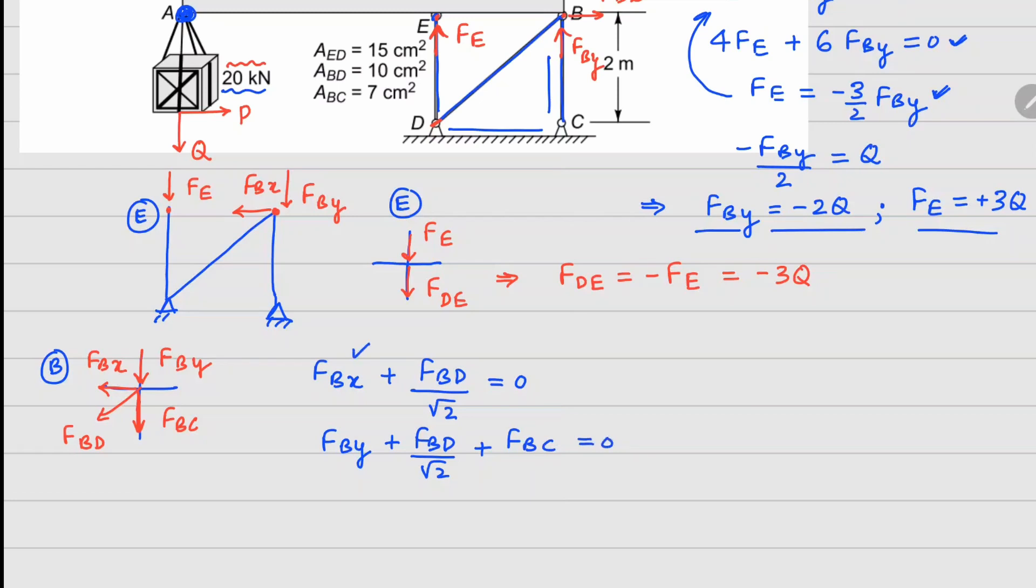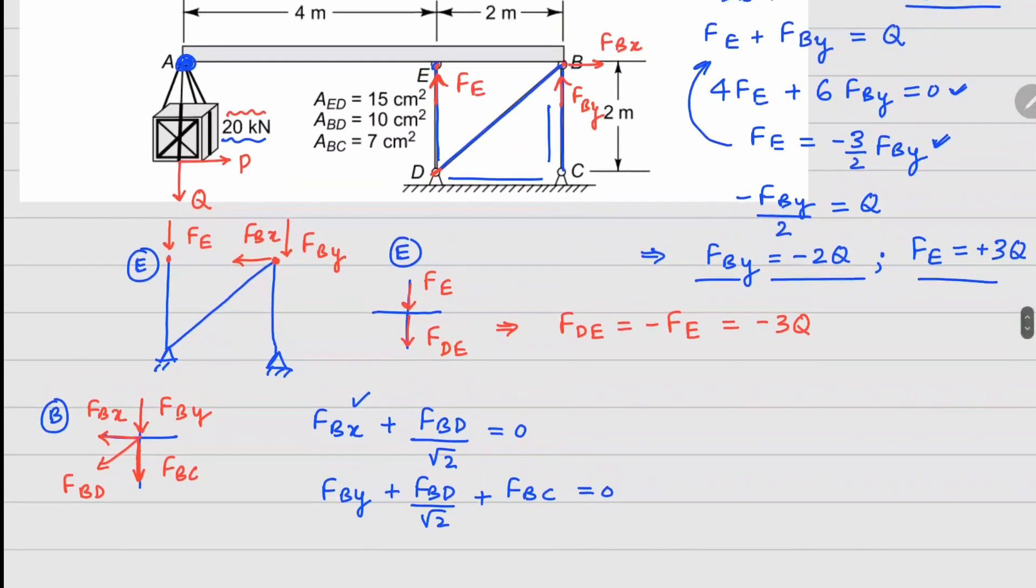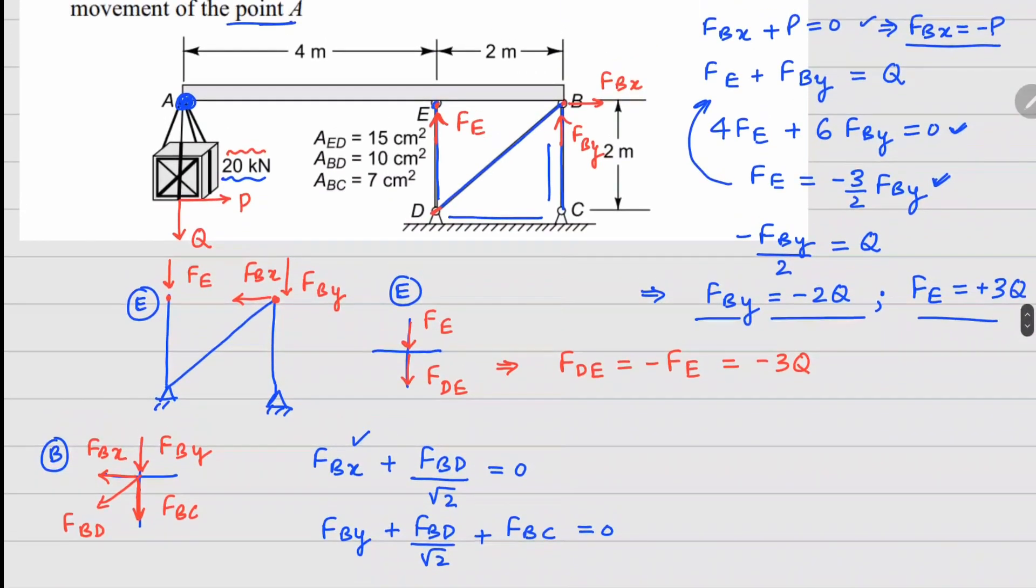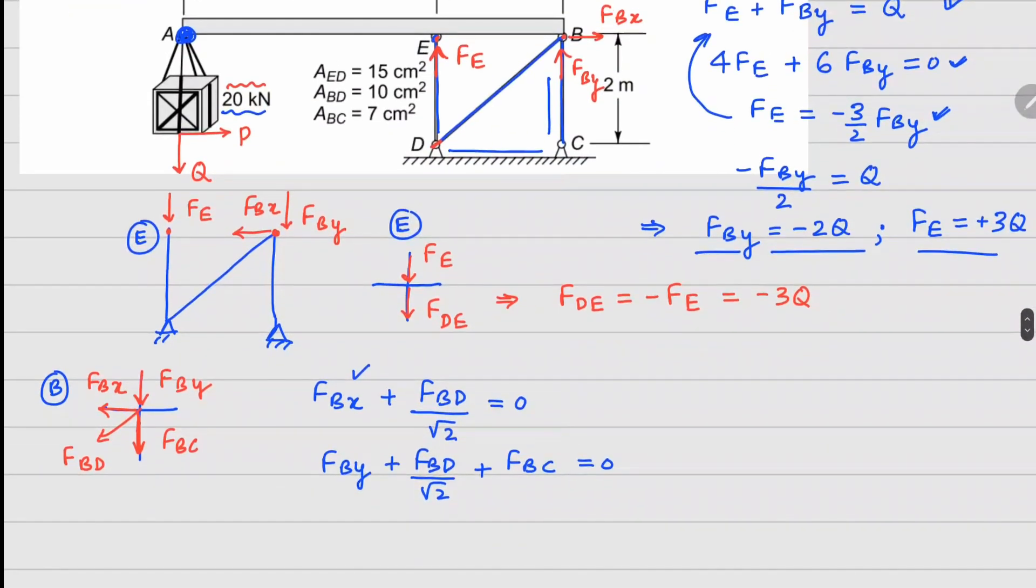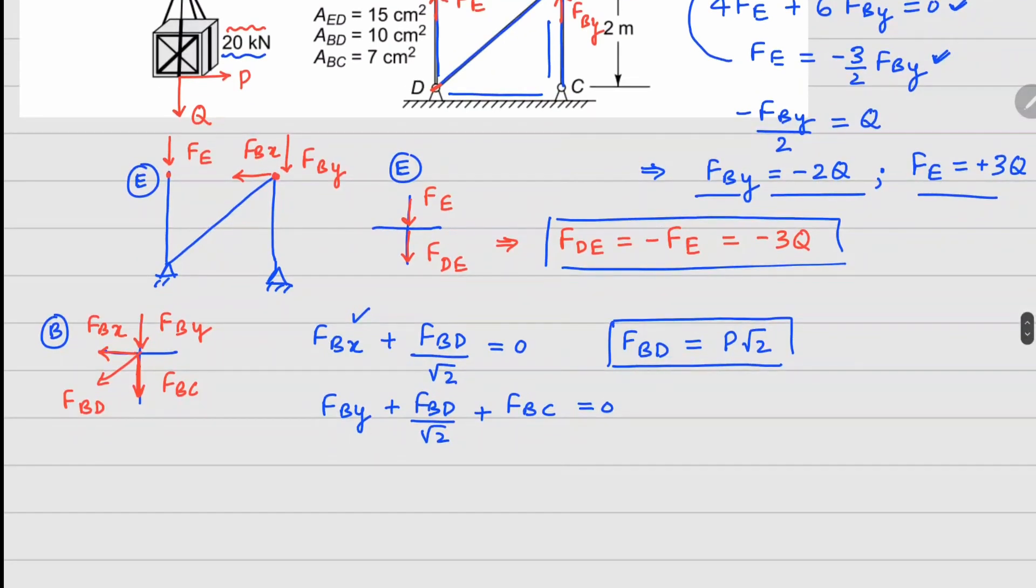Now FBx is known to us. Value of FBx is minus P. If I substitute minus P there, then your FBD is P times square root 2. So we got FBD there, FDE is already known here. Now in the last equation, I can substitute the value of FBy which is minus 2Q. So minus 2Q, FBD is P square root 2, so this becomes P plus FBC equals 0.